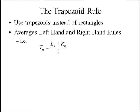In other words, if we add up our left hand and right hand sums and divide it by two, we get exactly the trapezoid rule, and we'll see why that is.